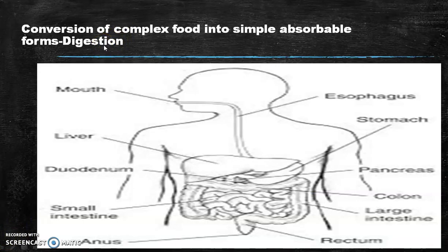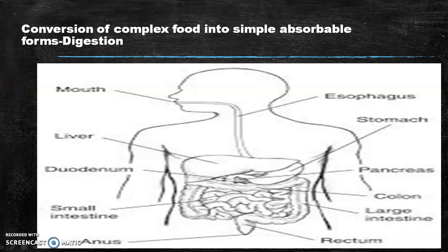How will you define the digestion process? The process by which complex food is converted into simple absorbable forms is termed as digestion. This digestive system consists of alimentary canal and various digestive glands. The alimentary canal begins with the mouth, leads to the buccal cavity, and ends at the anus. The buccal cavity consists of a number of teeth and the muscular tongue.